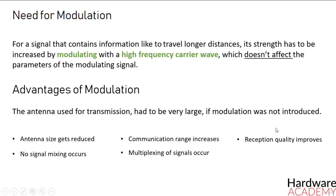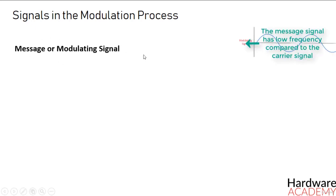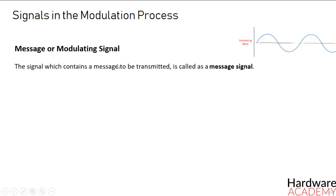Alright, so now that we know the advantages of modulation, let's see the signals in the modulation process. Following are the three types of signals in the modulation process. The first one is the message, or modulating signal, which is nothing else but the signal which contains a message to be transmitted, and this is called as a message signal. It is a baseband signal which has to undergo the process of modulation to get transmitted. Hence, it is also called as the modulating signal.